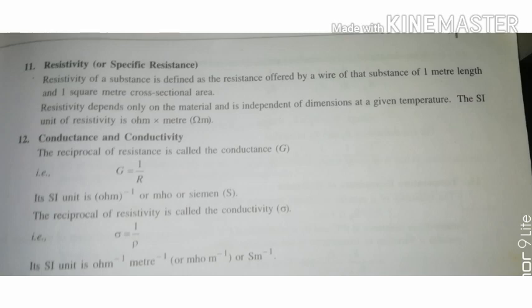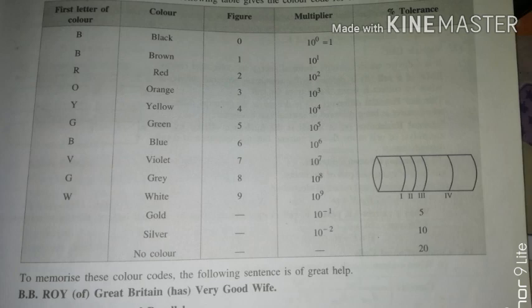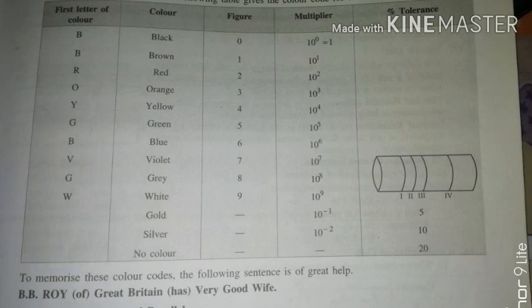This is the resistor color code. The shortcut mnemonic is: BB Roy of Great Britain has Very Good Wife, also wearing Gold and Silver necklace. B — Black, B — Brown, R — Red, O — Orange, Y — Yellow, G — Green, B — Blue, V — Violet, G — Grey, W — White. The last three colors are Gold, Silver, and No color (for tolerance).